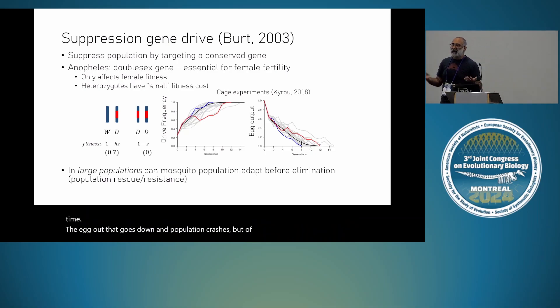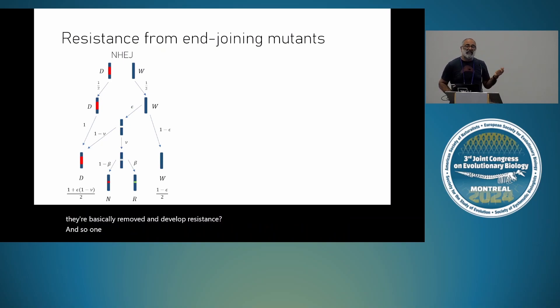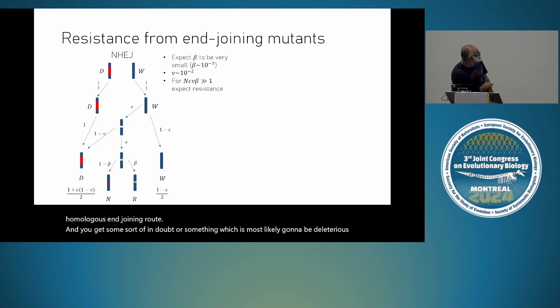Of course, populations in cages are not the same as populations in sub-Saharan Africa. There's billions of mosquitoes, most likely. So in practice, it's a population rescue problem. Can the populations adapt before they're basically removed and develop resistance? One way by which resistance can arise is by non-homologous end joining. That's basically when, once the wild type is cleaved, instead of going on to homologous direct repair, there's a small fraction that basically goes through this non-homologous end joining route, and you get some sort of indel, which is most likely going to be deleterious. But some small fraction might be functional and give you resistance.